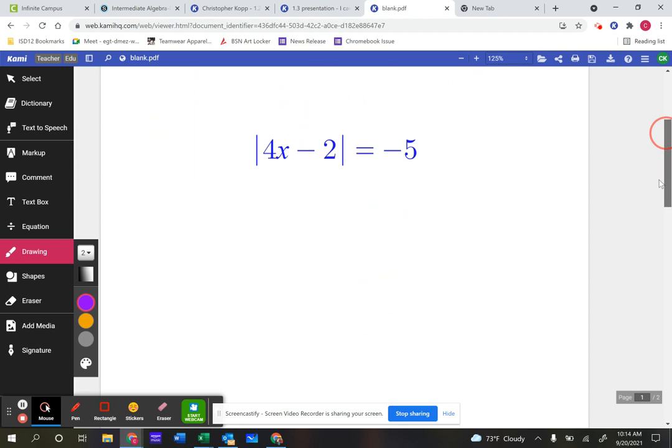So the first one looks like this: 4x minus 2 equals negative 5. Now if you understand this problem, it's actually pretty easy, but I think we definitely need to discuss it. When you see this negative 5 right here on that side, that is going to cause some issues for us. We all know that the absolute value of anything is going to be a positive number, and absolute value measures distance from zero.